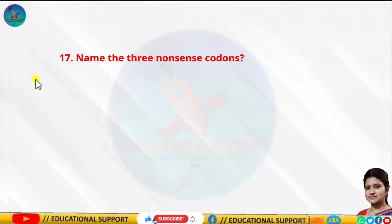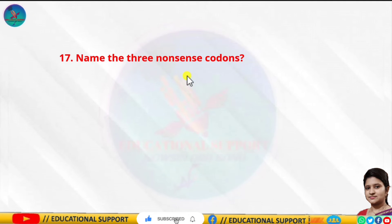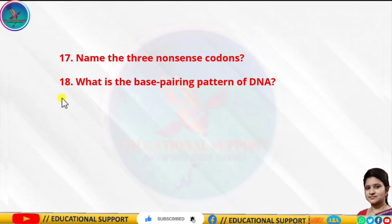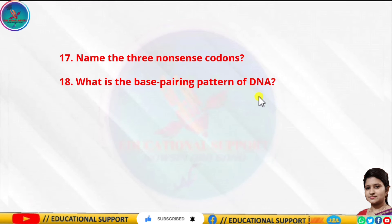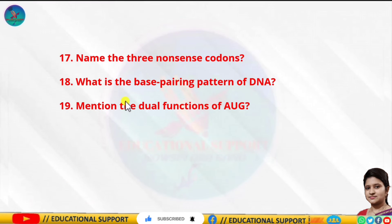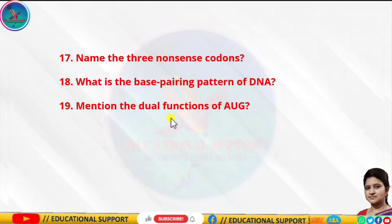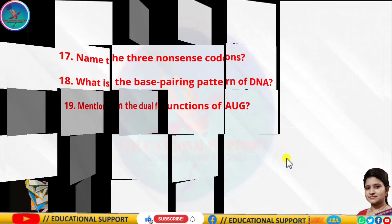Question number seventeen: name the three nonsense codons. This is very very important. Question number eighteen: what is the base pairing pattern of DNA? Question number nineteen: mention the dual functions of AUG.